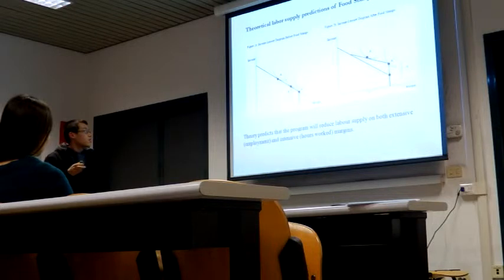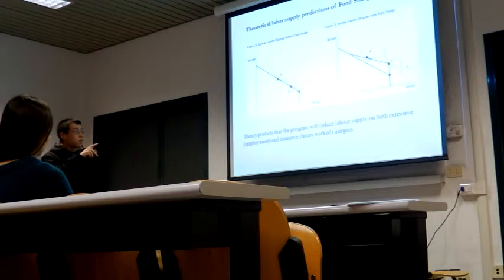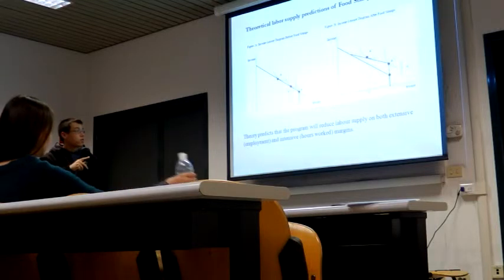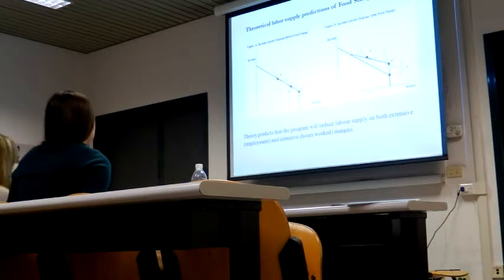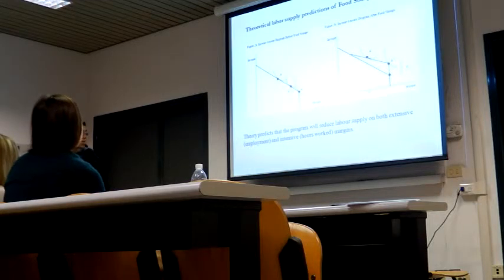People are incentivized to not work when this food stamp program is implemented, because theoretically, the marginal rate of substitution is lower than the one of the indifference curve on the extreme right. Basically, the theory says that when the food stamp program is introduced, work should reduce.